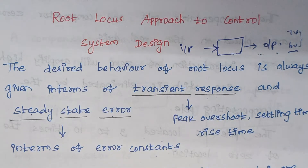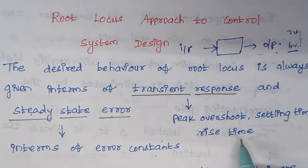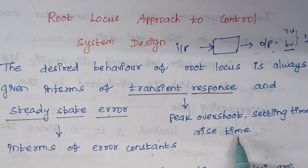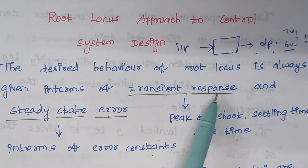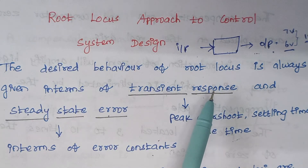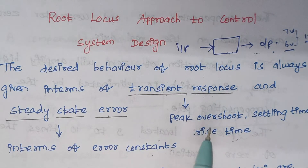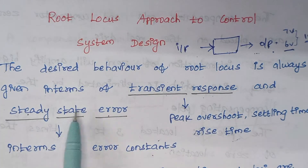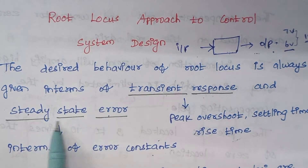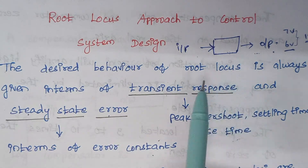During this transient response, the parameters that will be present are rise time, peak time, peak overshoot, settling time, etc. In other words, the condition of the system before it gives the steady state output is known as transient response.